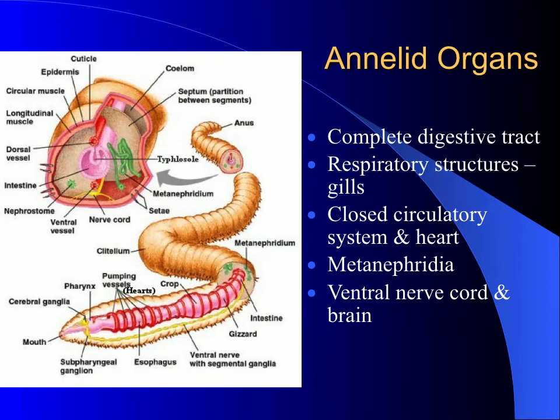Annelids are, like mollusks, very complex organisms. They have a complete digestive tract, respiratory structures called gills, and a closed circulatory system with a heart pumping blood containing a respiratory pigment that delivers oxygen through their body. They have excretory organs called metanephridia, with some in each segment. They also have a ventral nerve cord and a brain that loops around the pharynx, like many invertebrates.